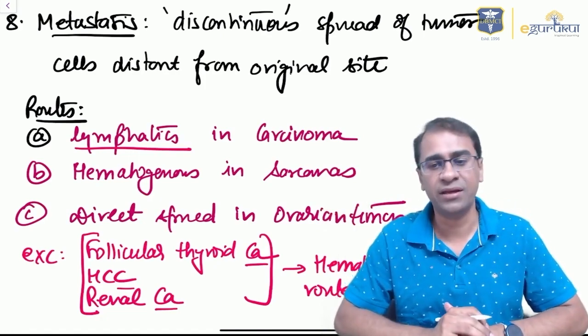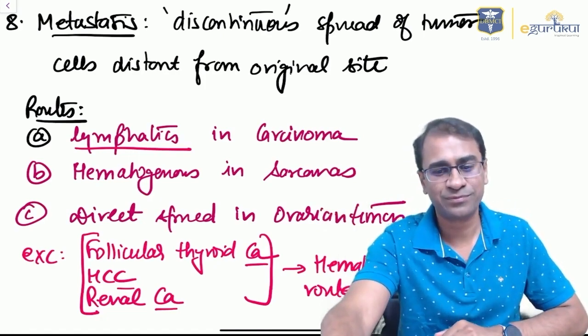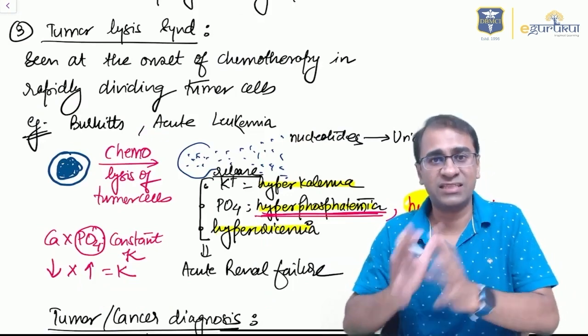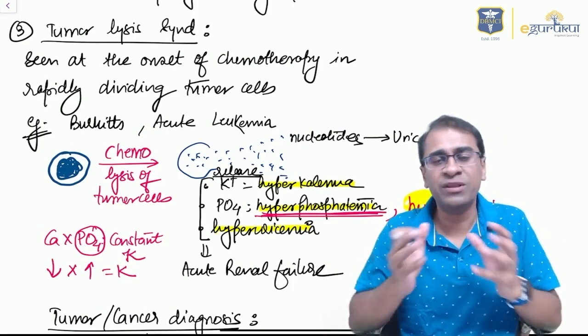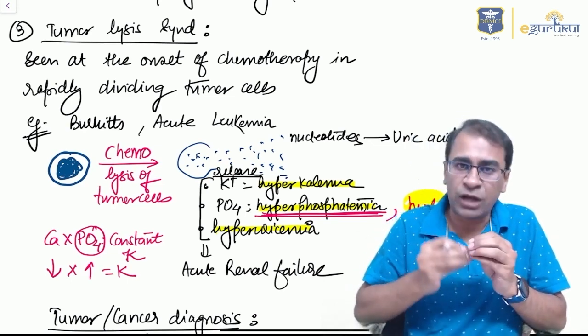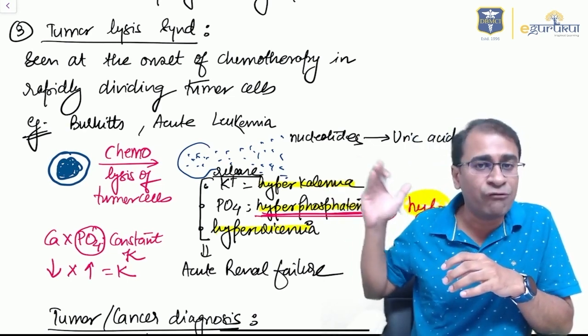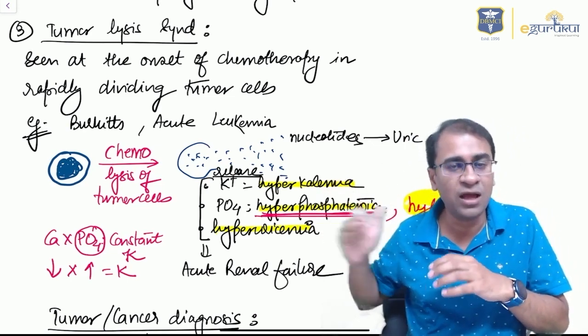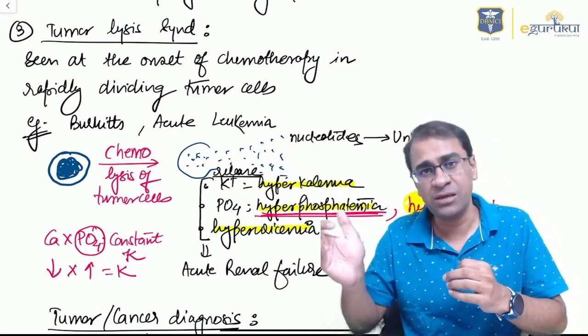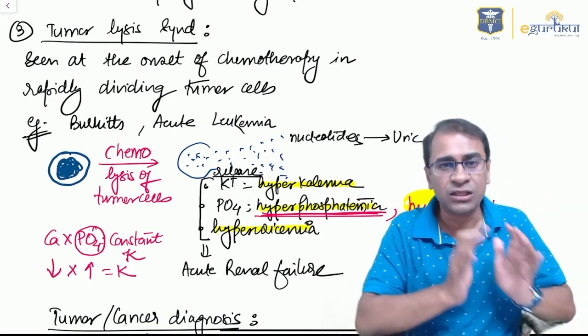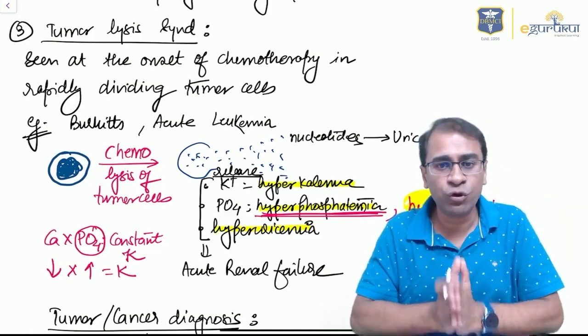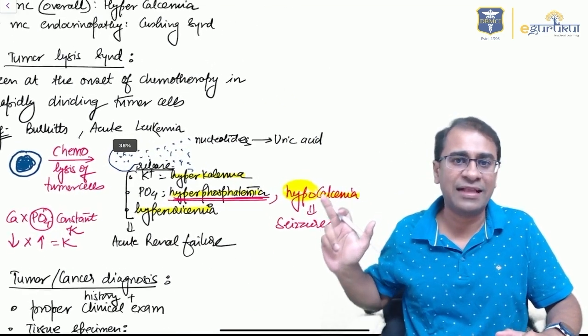A very important topic in cancer is tumor lysis syndrome. When tumor cells break with the effect of chemotherapy, potassium comes out causing hyperkalemia, phosphate comes out causing hyperphosphatemia, uric acid comes out causing hyperuricemia. But remember, when phosphate increases, calcium must decrease, and hence the fourth finding is hypocalcemia, not hypercalcemia. This is very important.